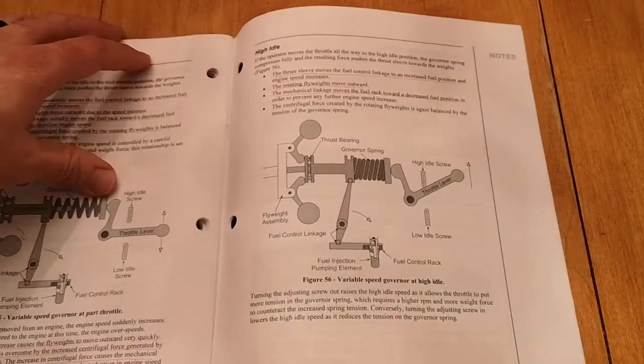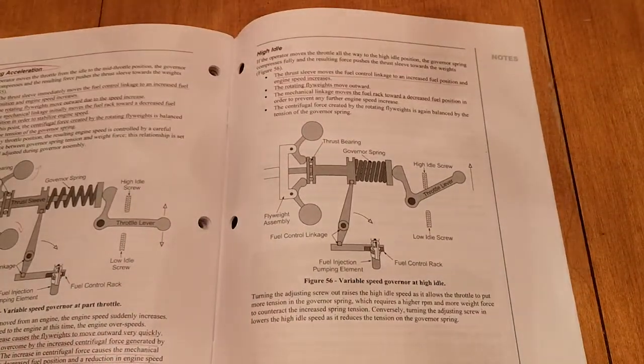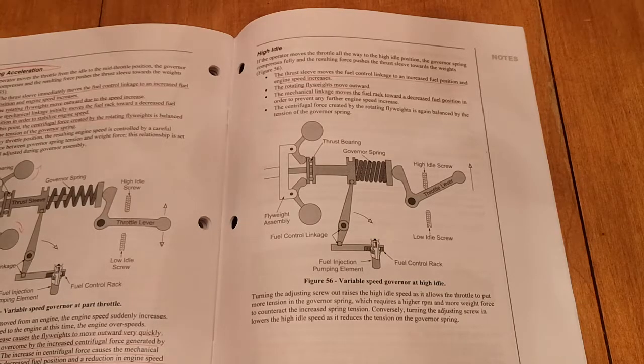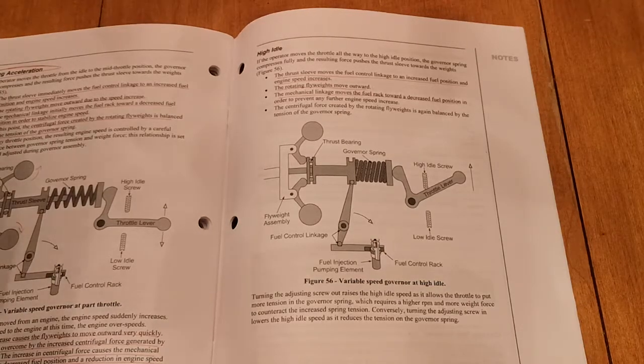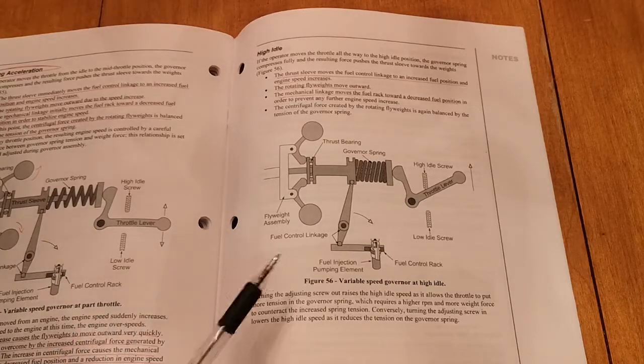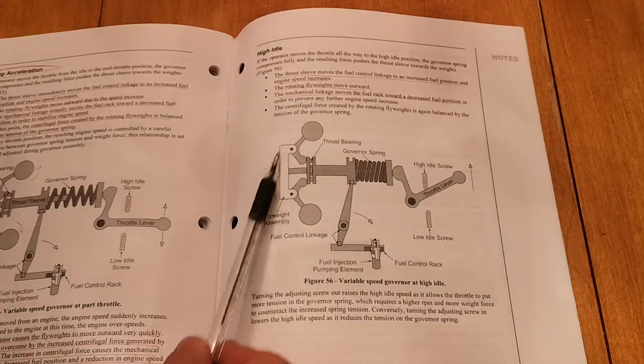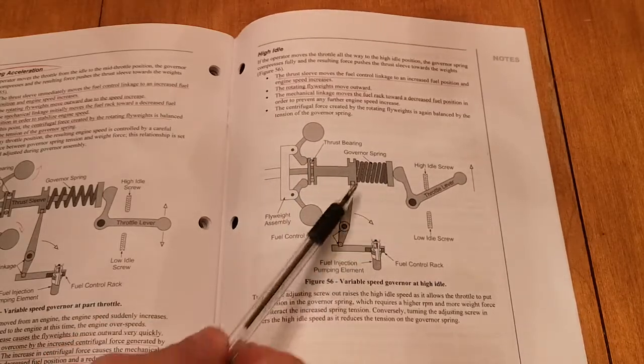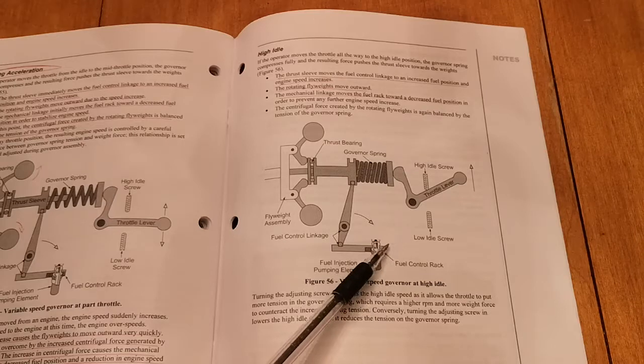A better diagram of a mechanical governor is right here in the book. This is module 203E, page 47. As you can see, here's the governor weights I was talking about, and here's the spring that it reacts.